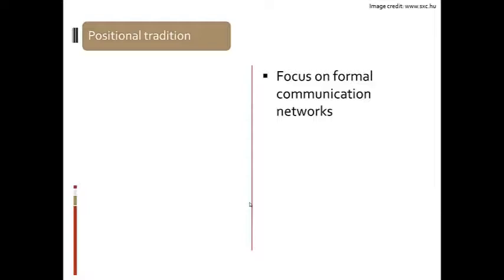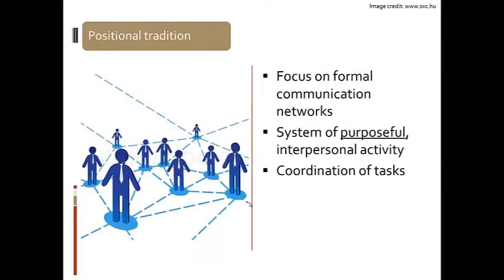The positional tradition has as its core that formal communication networks is how we will understand communication. We take communication and look at it from a formal perspective and see how these networks in an organisation form. We see communication in this formal focus as a system of powerful interpersonal activity. Communication's main goal is the coordination of tasks. The positional tradition basically just looks at those communication networks and draws lines of coordination between them as interpersonal activities.